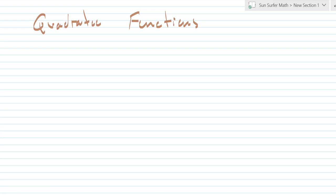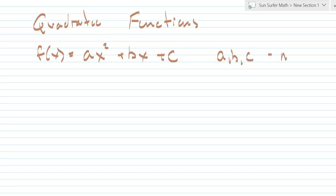In this video, I'm going to be doing a quick review of quadratic functions. A quadratic function is a function in the form a times x squared plus b times x plus c, where a, b, and c are simply numbers. In the first term, a is being multiplied to the x squared term, b is being multiplied to the x term, and c is just a constant.